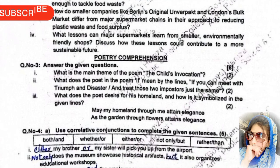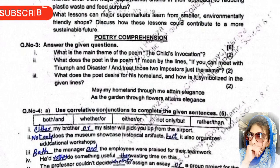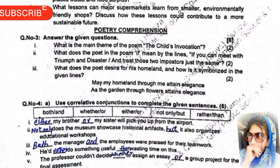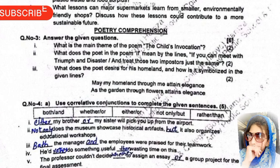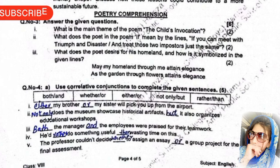Poetry comprehension, question number three: answer the given questions. First, what is the main theme of the poem 'The Child's Invocation'? Second, what does the poet mean by the lines 'if you can meet with triumph and disaster and treat those two impostors just the same'? Third, what does the poet desire for the homeland and how is it symbolized in the lines: 'May my homeland through me attain elegance, as the garden through flowers attain elegance'?